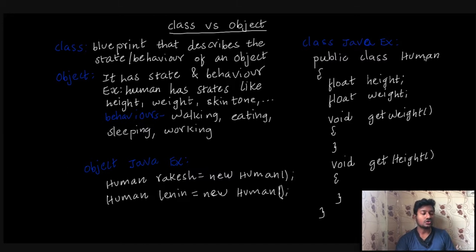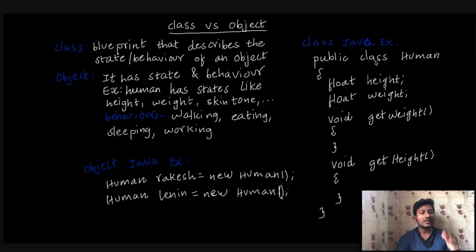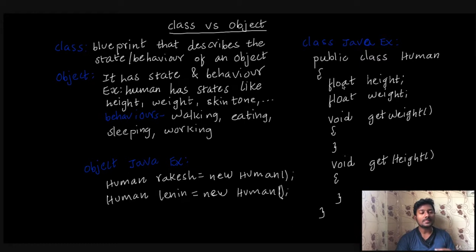For example, if you are creating a human class, you can also create a dog class or cat class. We decide the name following the rules for public classes. Then we use open and close curly brackets. Inside, we specify the state — such as height and weight — using data types. We will cover the full details in the next video. This is just a theoretical overview. Then we add the methods.